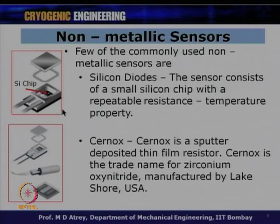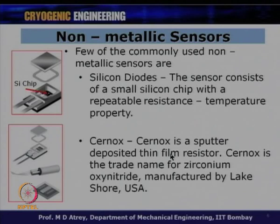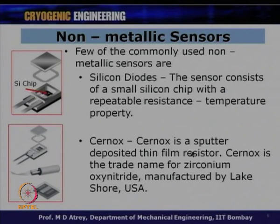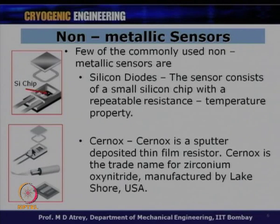Next is Cernox, which has a similar appearance to a silicon diode. Cernox is a sputter-deposited thin film resistor. Cernox is actually a trade name for zirconium oxynitride manufactured by Lakeshore, USA. The sensor is housed in a small casing. A third category is ruthenium oxide — a thick film resistor widely used in magnetic field applications, working on the same principle of resistance changing with temperature.